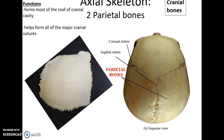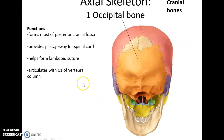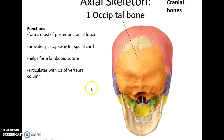The parietal bones form most of the superior roof of the cranial cavity and are involved in the major cranial sutures we need to know — there is a left and right parietal bone. The occipital bone forms the posterior portion of the cranial cavity. It has a passageway for the spinal cord, is involved with the lambdoid suture, and articulates with the first vertebra of the vertebral column.